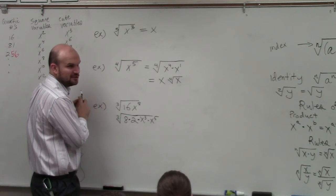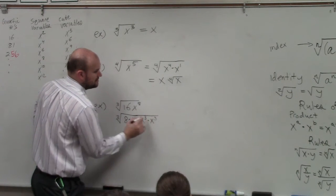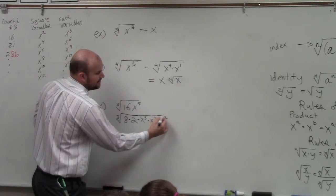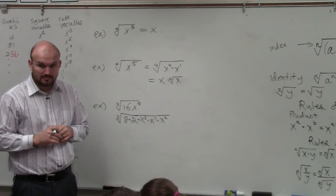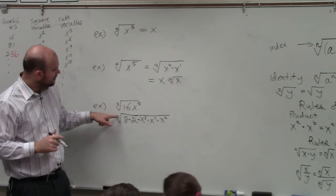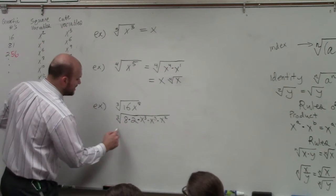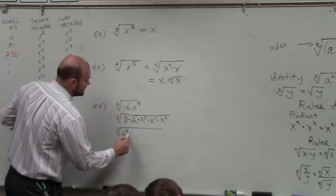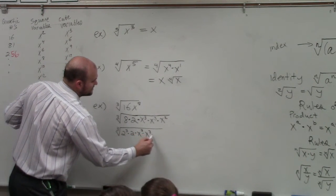However, could I do another x cubed in there? Yeah. So that's x to the 6th. So therefore, I need to multiply this by x squared. So this 8 can be rewritten as 2 cubed. So I really have cube root of 2 cubed times 2 times x cubed times x cubed times x squared.